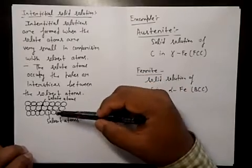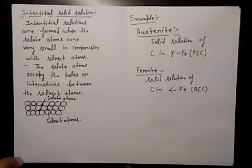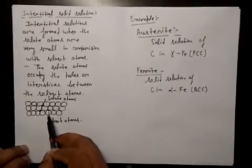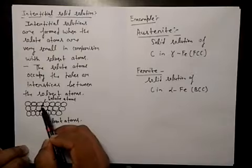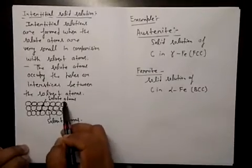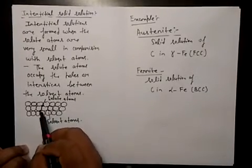So here you can see in the figure, these are the solvent atoms and these are the void spaces where solute atoms have taken these places.